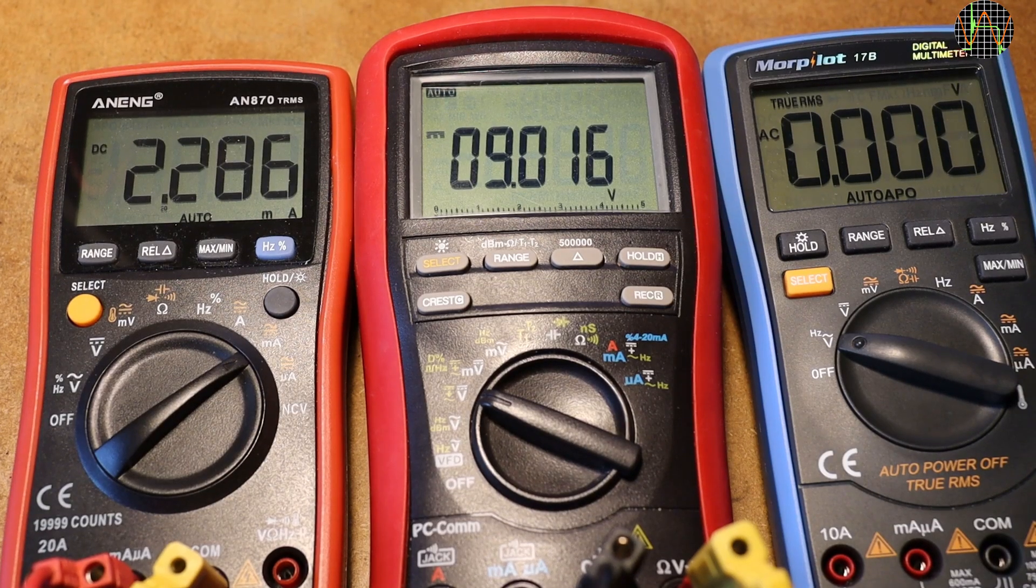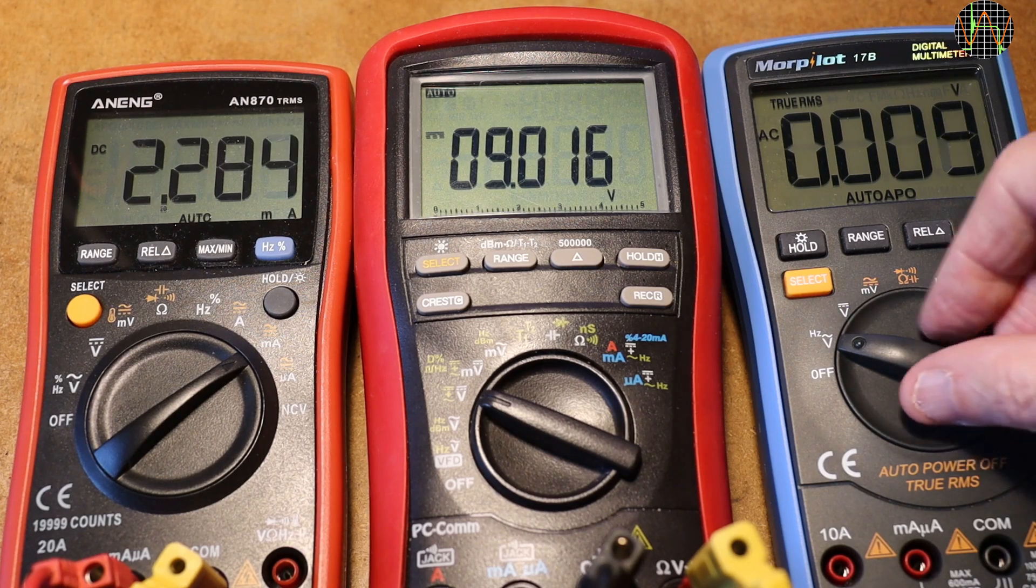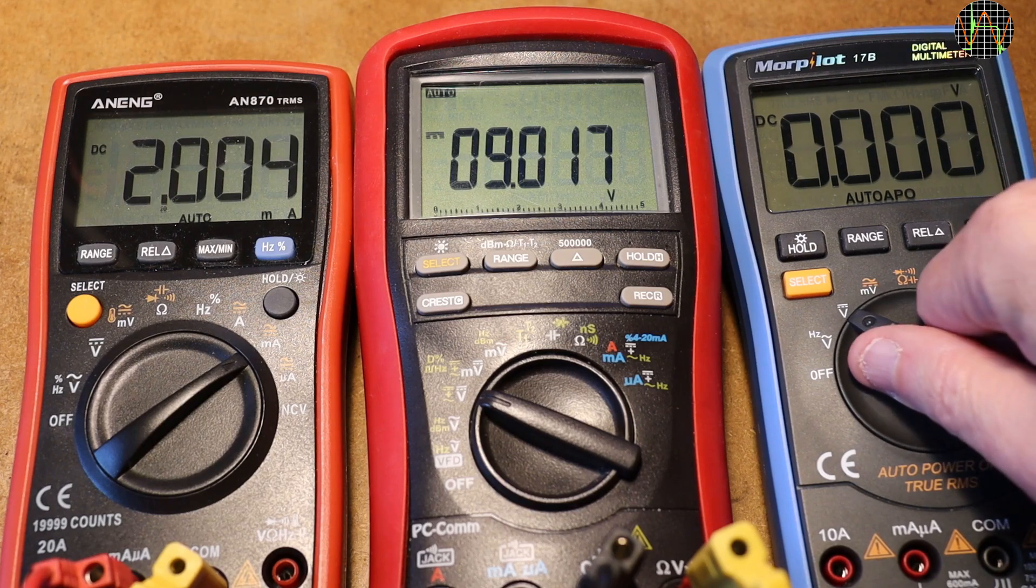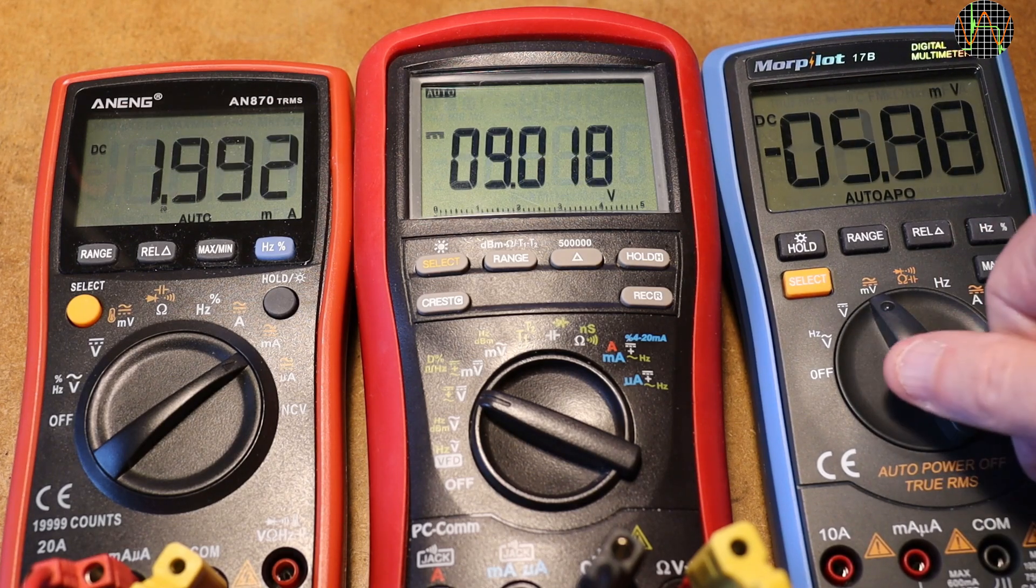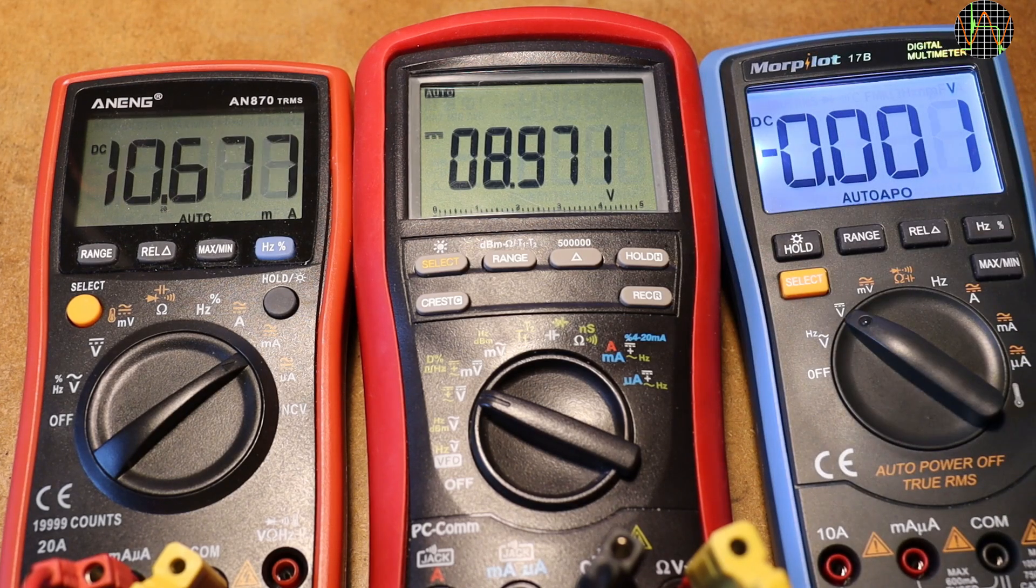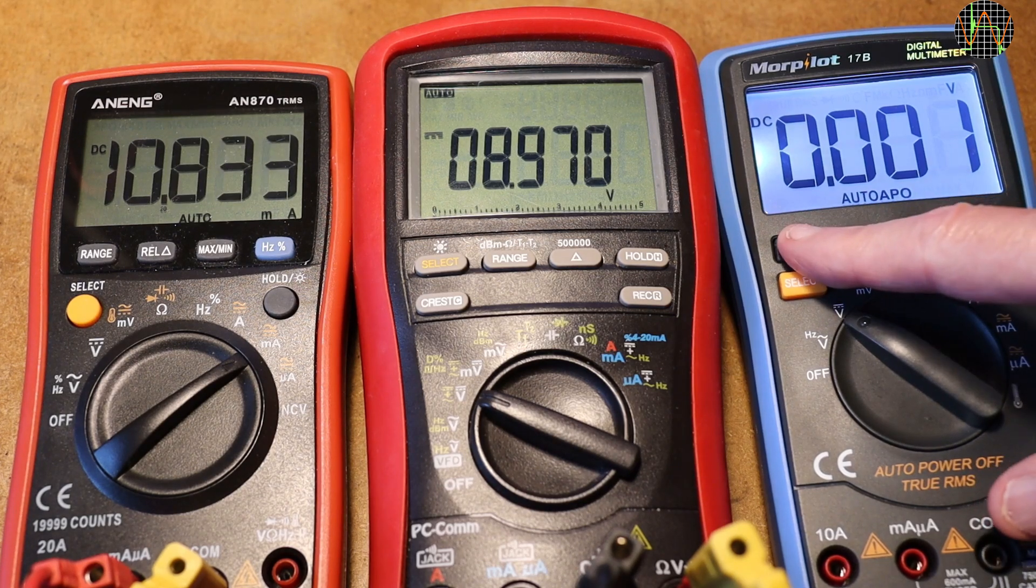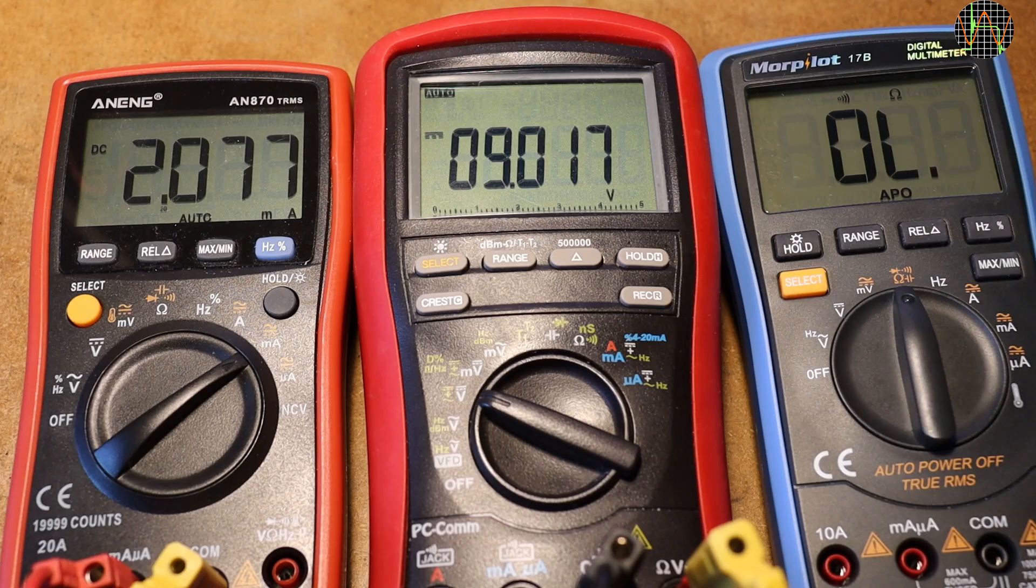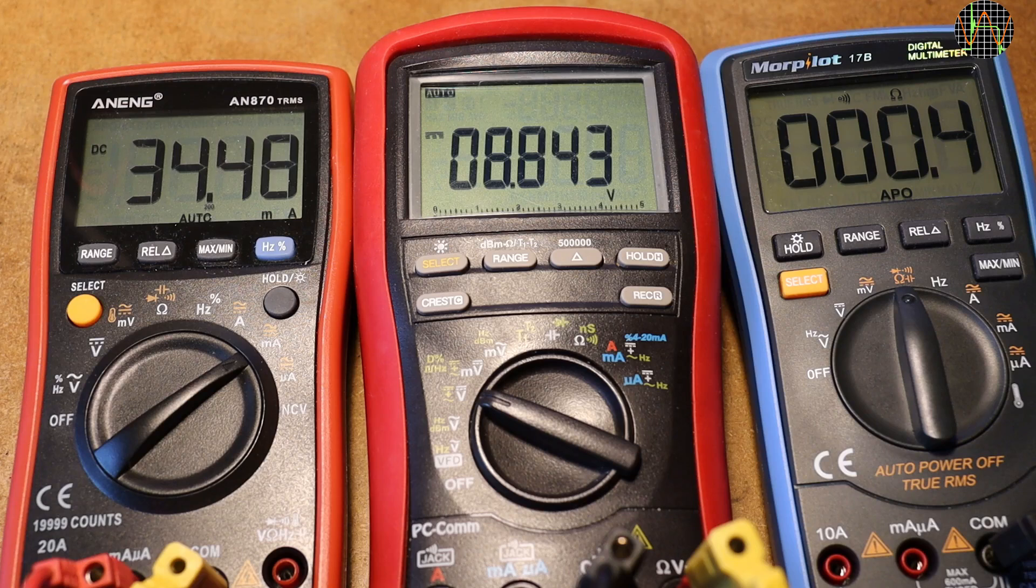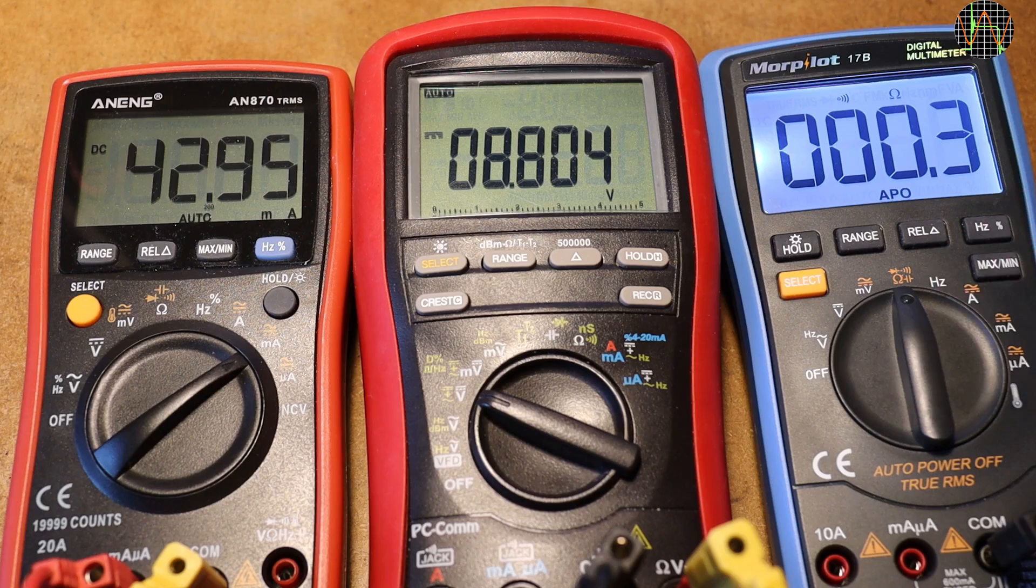To find out how much juice the Morpilot 17B takes from its 9V battery, I powered it through my bench power supply. The running meter on the left shows the current and the Primen in the middle the voltage. At 9V the meter takes between 2 and 2.3mA. Turning the backlight on increases this to nearly 11mA. Common with many other meters, the beeper uses an enormous amount of current. The consumption shoots up to more than 34mA when it sounds. And backlight plus beeper tops it at a massive 43mA.